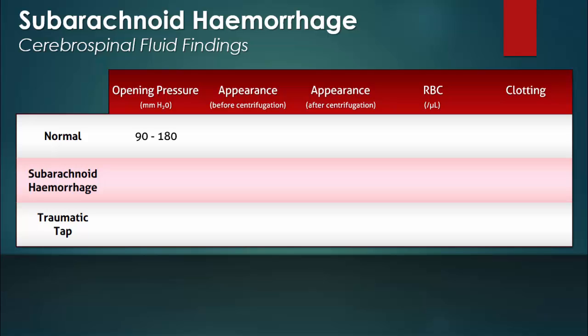With the patient lying in the lateral decubitus position, the normal opening pressure in adults is considered to be between 90 and 180 mm of water. In the setting of a subarachnoid hemorrhage, the opening pressure may be normal or elevated, while with a traumatic tap, the opening pressure will be normal or decreased.